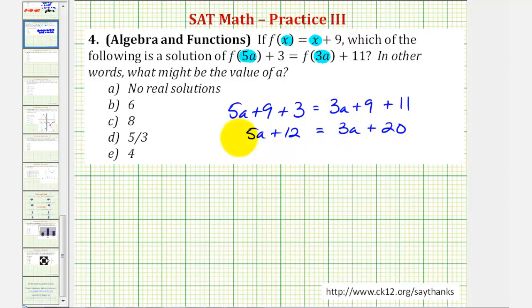Notice how right now we have a on both sides of the equation, and we need a on one side, so for the next step, let's subtract three a on both sides. So now we'd have five a minus three a, that's two a, plus 12 equals 20.